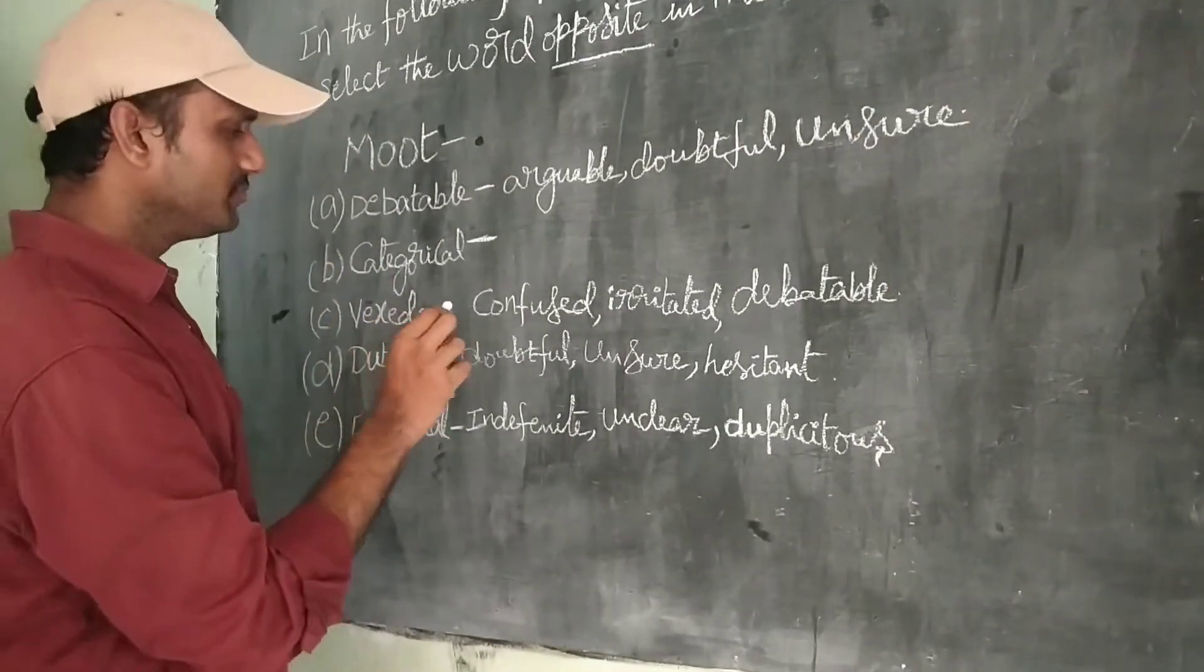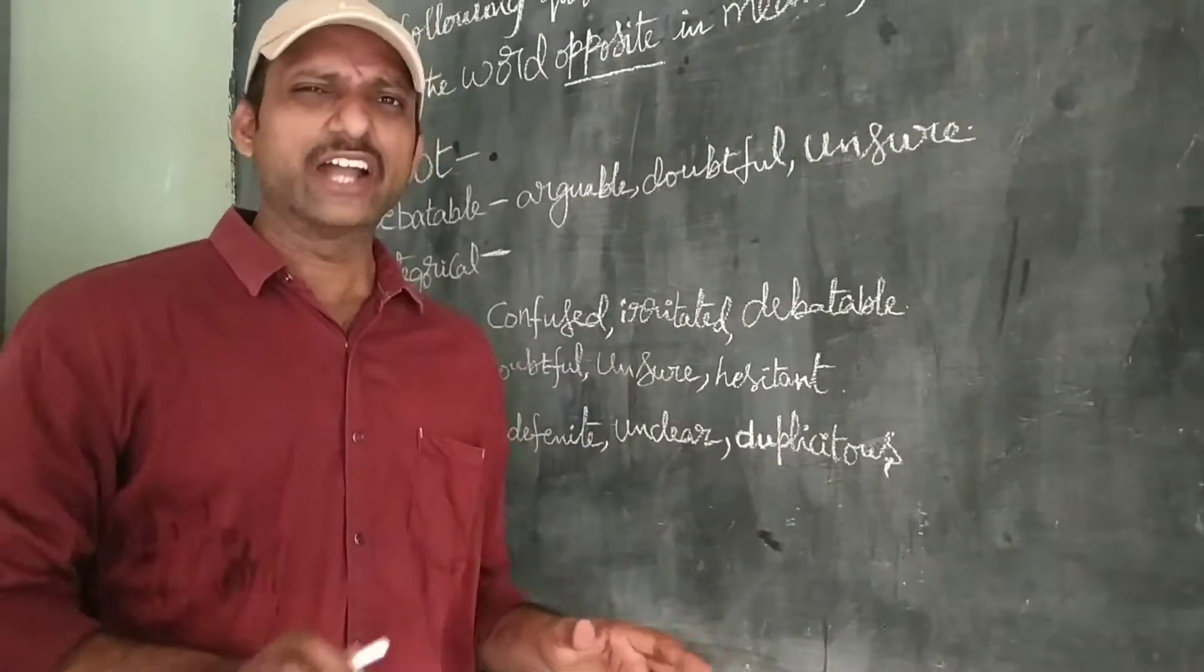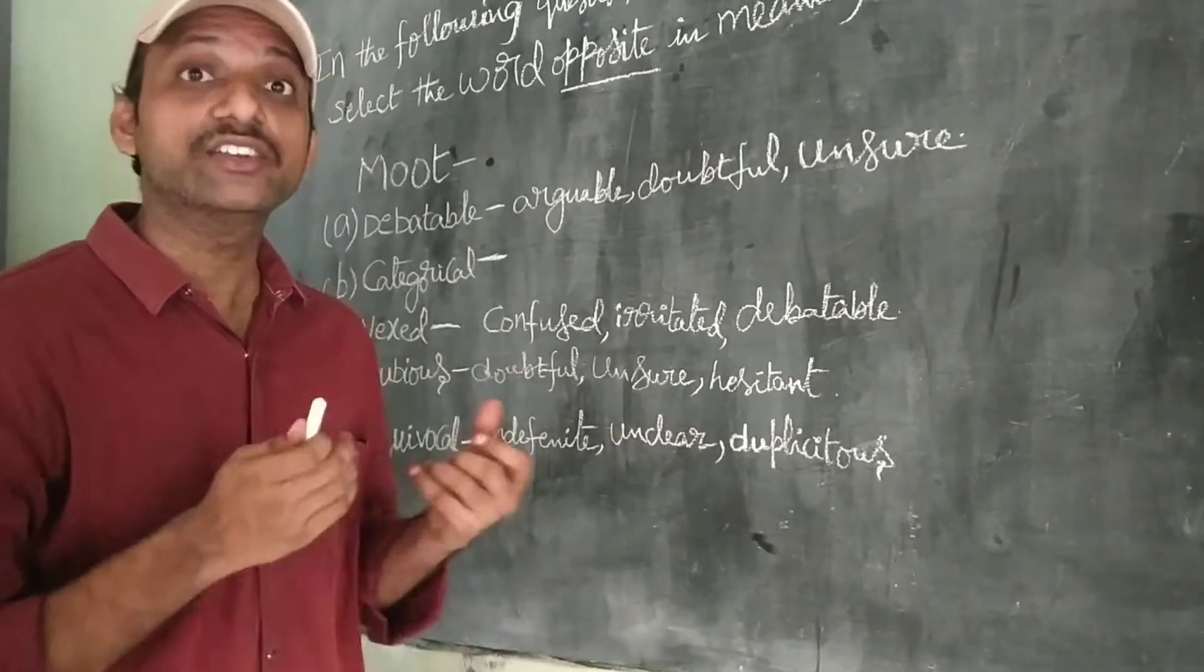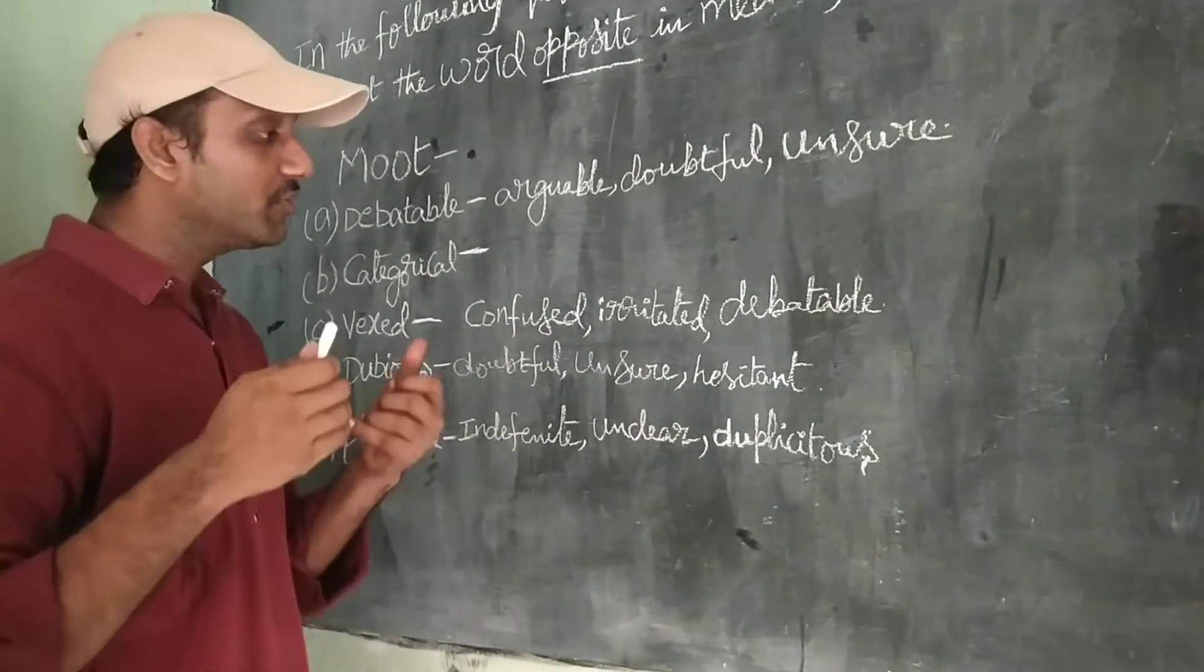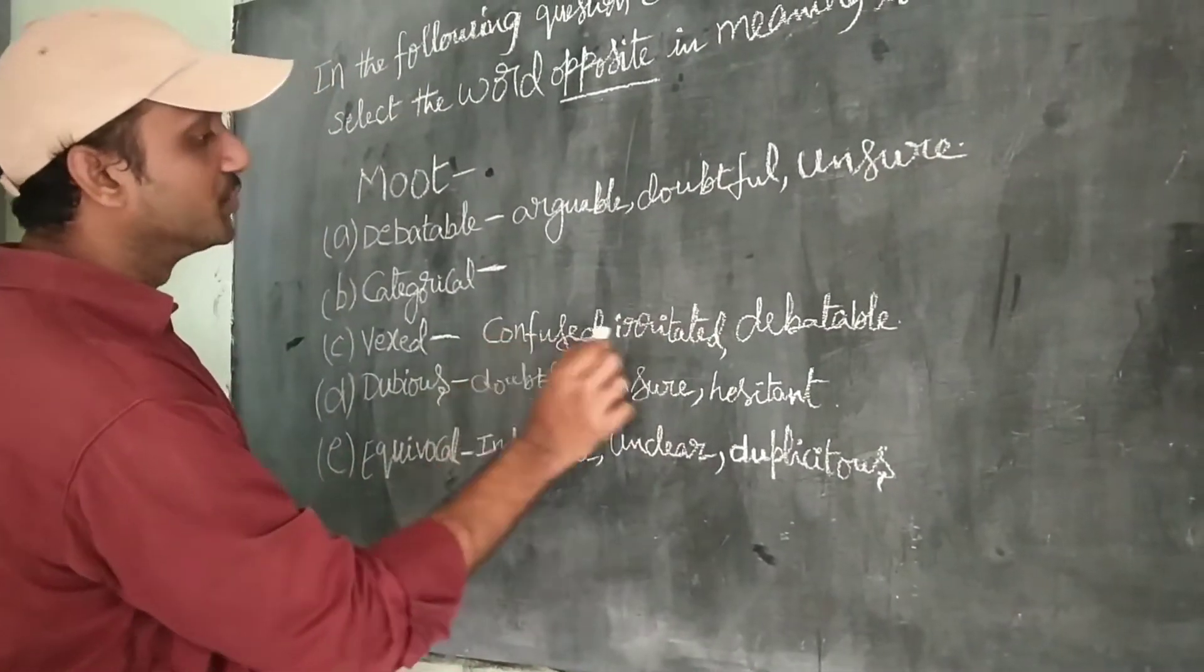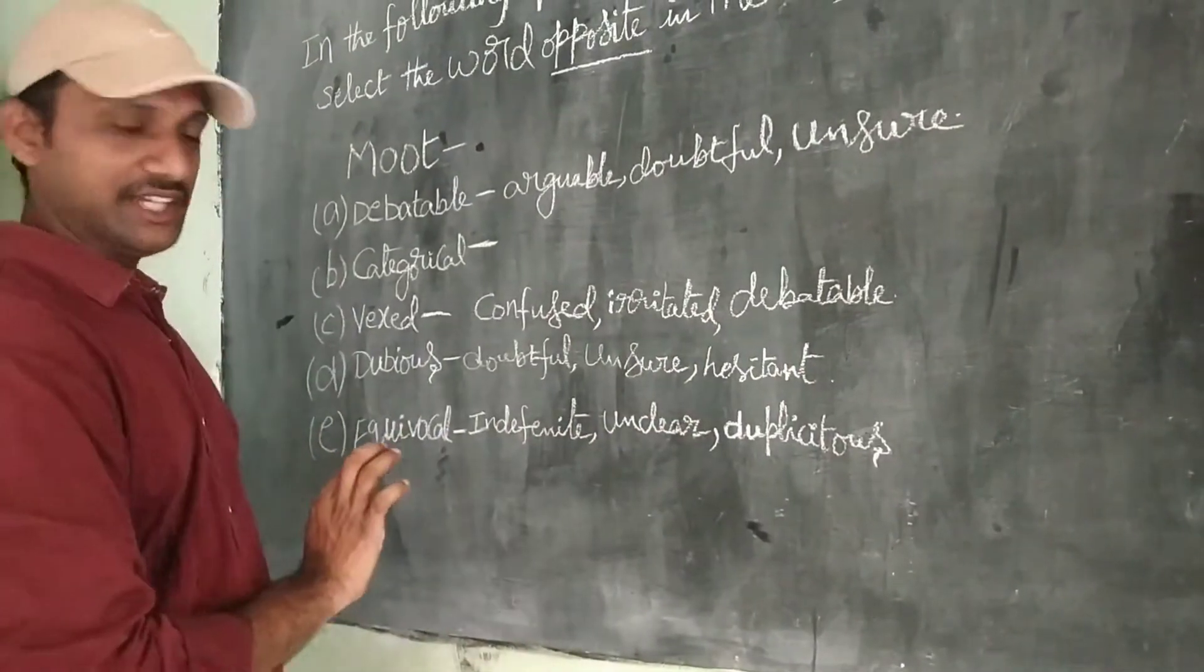Let us see. Vexed. Vexed in the sense, I am getting rid of that. I don't want to talk about that anymore. Irritated. Hesitated. Confused. I don't have clarity about that. So it refers to confused, irritated, debatable. Right?